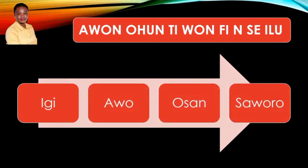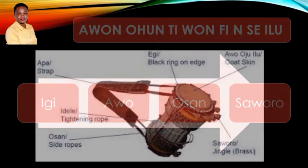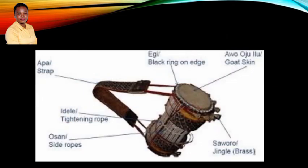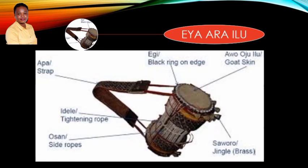What are the things used for the drums? You can see the image — it's an anatomy of the drums. These are the things we use in making the drums.